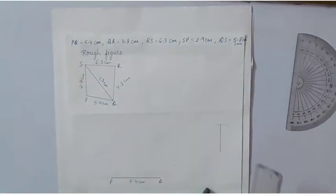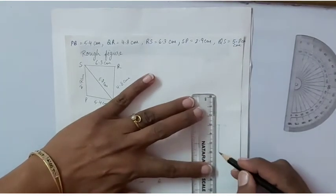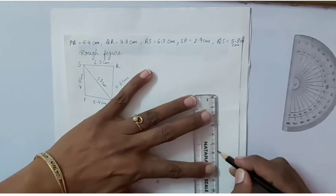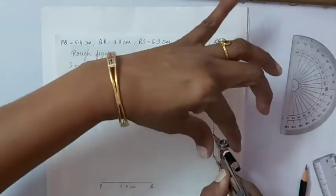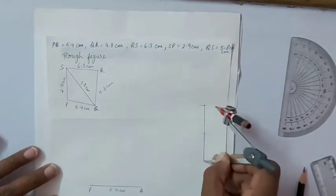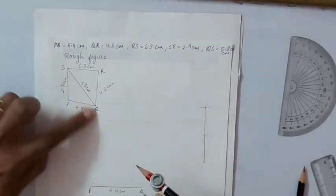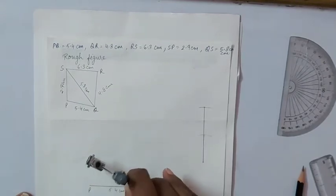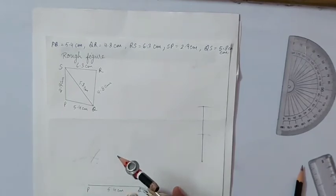Similarly, we will have to cut arc for QS. So we will draw a line segment of 5.8 centimeter. Then we will set our compasses for the required measurement and then keeping the compasses on point Q.